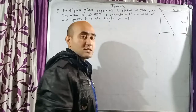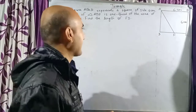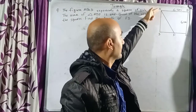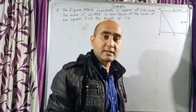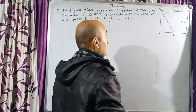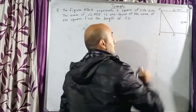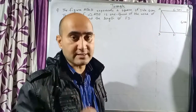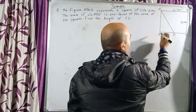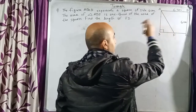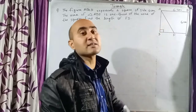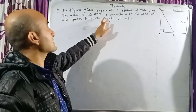Next, triangle ADF is a right-angled triangle, because the four vertices of a square each have 90 degrees. So there is a 90-degree angle at vertex D, making triangle ADF a right-angled triangle. You have to find the area of triangle ADF.